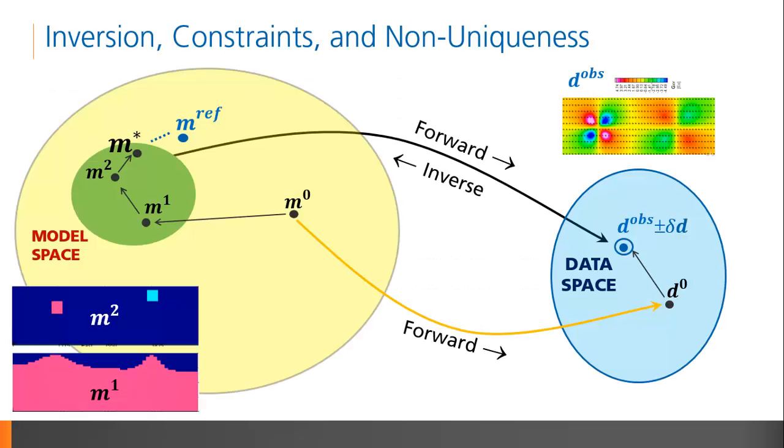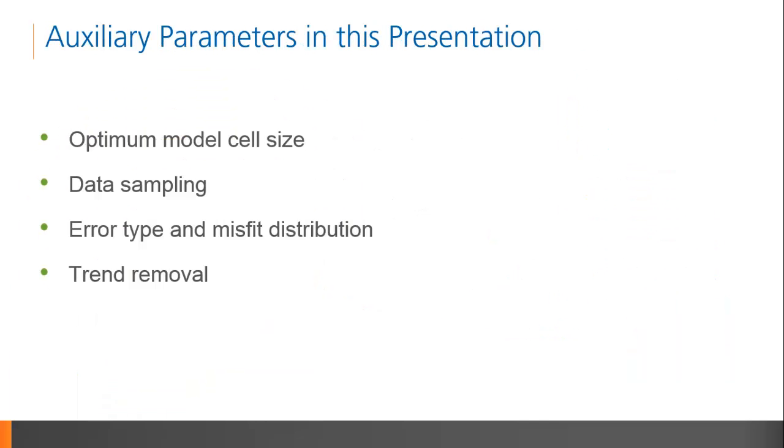In the introductory video, I mentioned a class of models that result from the inversion of a given dataset. The decision for the algorithm to settle on a particular model is strongly governed by the auxiliary parameters given by the user. Moreover, the recreation of any inversion result depends on the choice of auxiliary inputs.